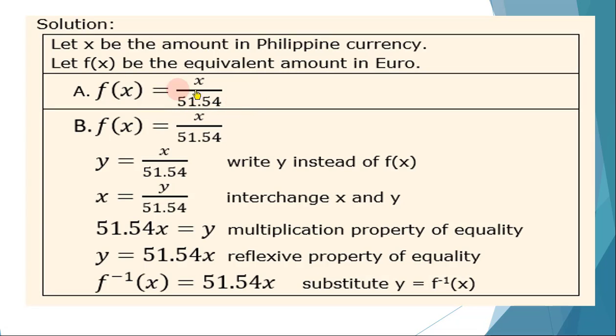This is our function converting the Philippine currency into a euro. For letter b, we have to find the inverse. So rewriting this in the form y = f(x). Then interchanging x and y. And finally, solving y in terms of x. So we have here the reason. Therefore, f⁻¹(x) = 51.54x. So we can just substitute y = f⁻¹(x).